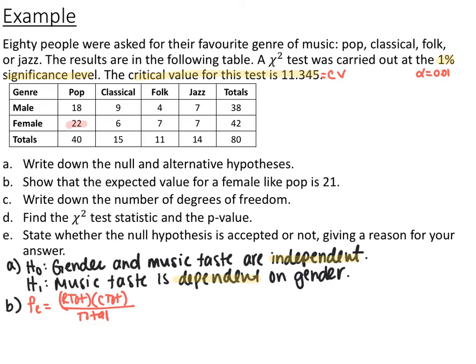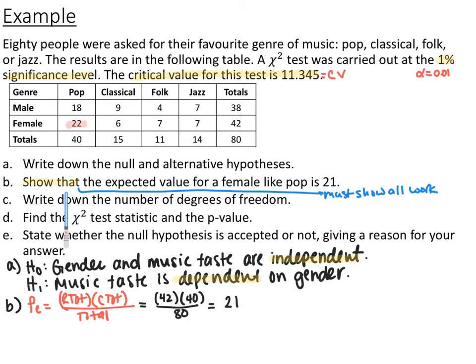For part B, we show that the expected value for a female who likes pop is 21. Our observed value for females who like pop is 22. The expected value formula is row total times column total divided by total total. The row total — total females — is 42. The column total — total people who like pop — is 40. Total surveyed is 80. So 42 times 40 divided by 80 gives an expected value of 21.